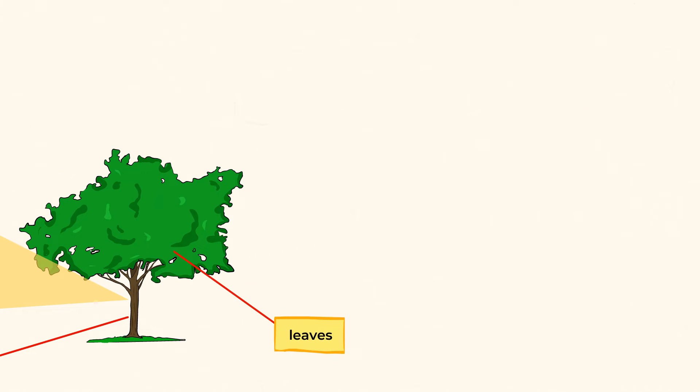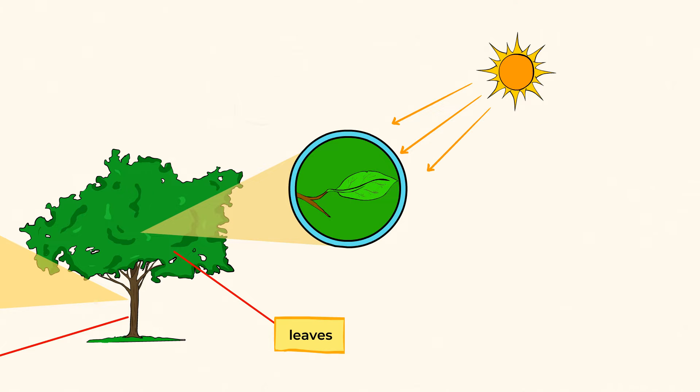And last but not least, leaves. They connect to the stem, and they collect light from the sun, and they collect carbon dioxide from the air.